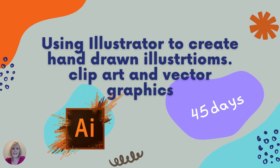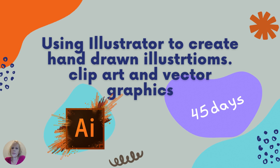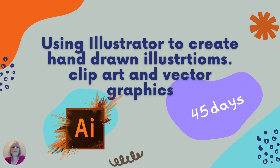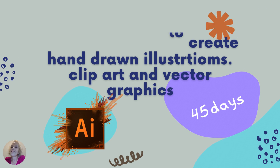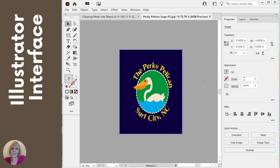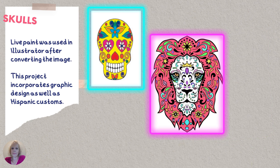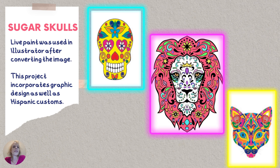After we finish with Photoshop, we then spend another 45 days in Adobe Illustrator. We do work with clip art and vector graphics. Here's an example of the Illustrator interface — it's quite a bit different than Photoshop, but some of the elements are similar. Students love when we do these sugar skulls. For this design, we actually use live paint in Adobe Illustrator to make these great, unique designs.